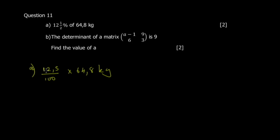To simplify, 25 is a factor for top and bottom. You divide: 25 into 100 gives 4 with remainder 0, then into 125 you get 5, giving 0.5. Then 1 into 6 is 1, remainder 2; 2 into 24 is 6; 6 into 8 is... so you get 16.2 multiplied by 0.5, which is simply half of 16.2.